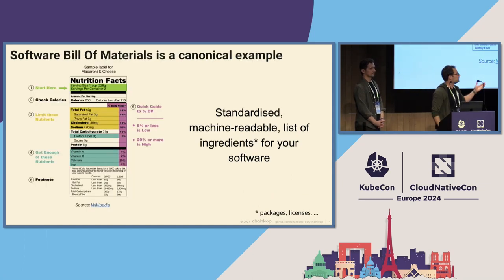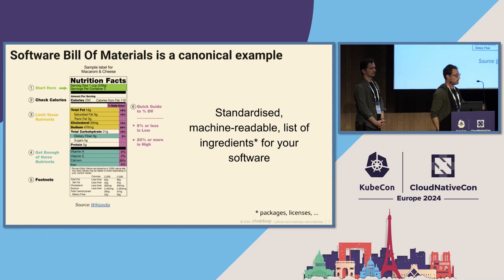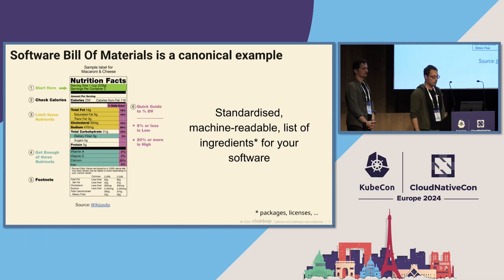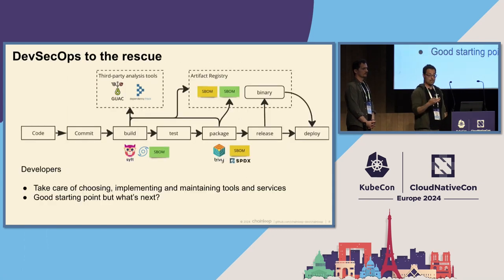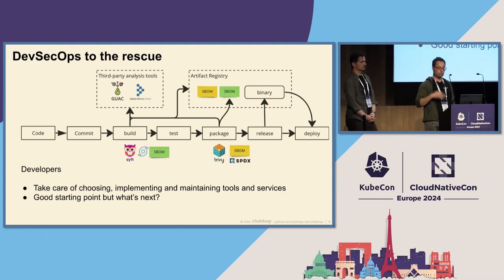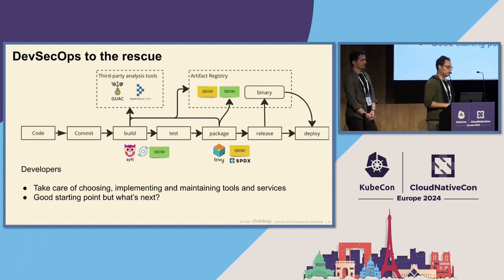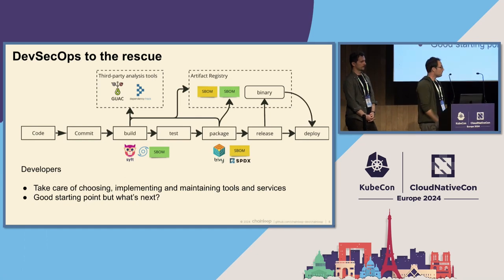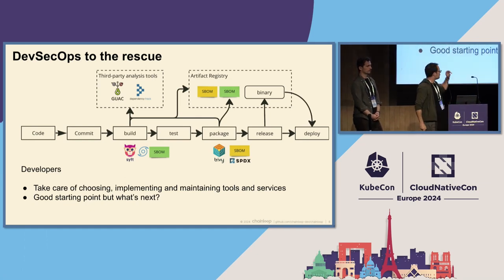Software bill of materials is a canonical example. For those who haven't heard of it, it's just a standardized machine-readable list of packages, licenses, and so on. You might have been asked to start generating those software bill of materials in some parts of your pipeline, or running some CVE scans. For example, you might have chosen to generate a CycloneDX SBOM when building the binary, and then send it to an artifact registry, OCI registry, or dependency track.